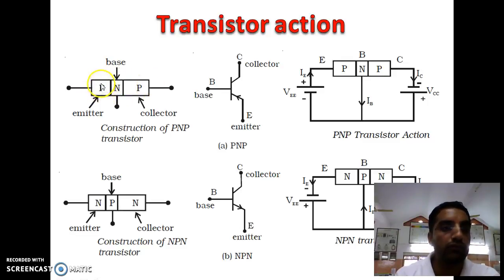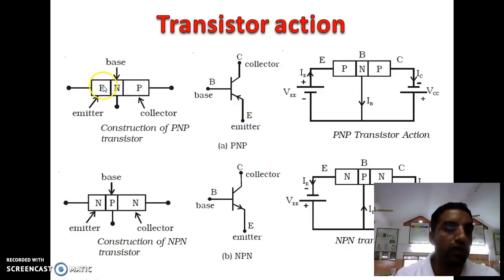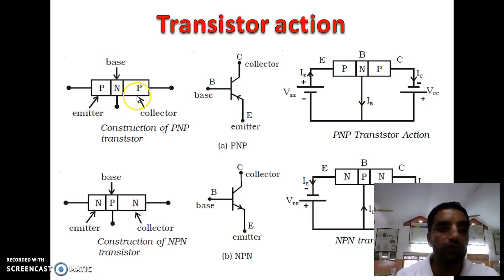In the case of PNP transistor, there are two P layers. The size of one P layer is maximum as compared to the other. That is why the terminal from the larger layer is always the emitter and the terminal from the smaller layer is always the collector. The terminal from the middle is the base. The emitter is highly doped trivalent impurity, the collector is moderately doped trivalent impurity, and the base is lightly doped pentavalent impurity.